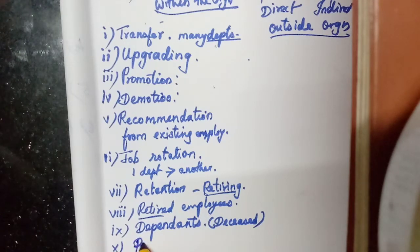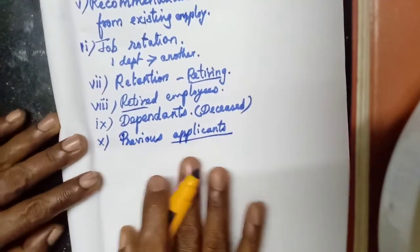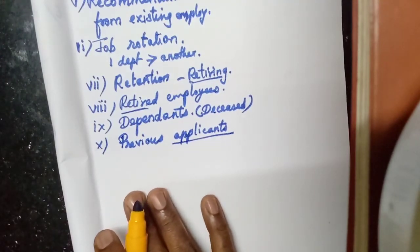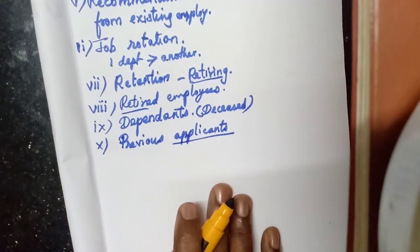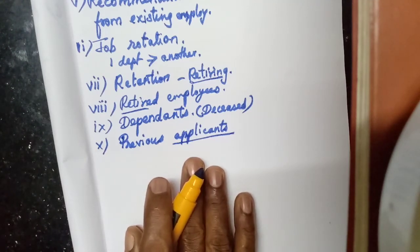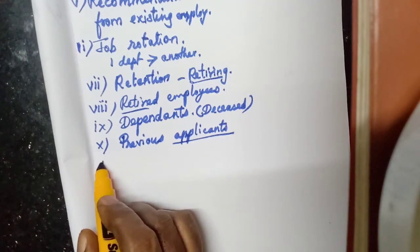Previous applicants: often applicants will be coming and giving applications to an organization. Many applications will be kept as required. If they need any employees to be recruited, or sometimes they may have kept aside some applications — those are the previous applicants. They may be called. They are like the waiting list — they will be called and provided job opportunities.